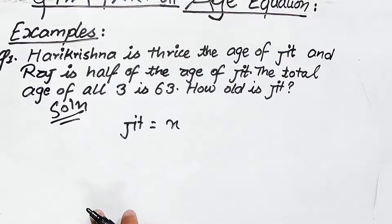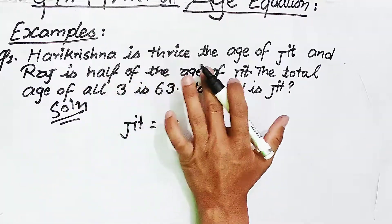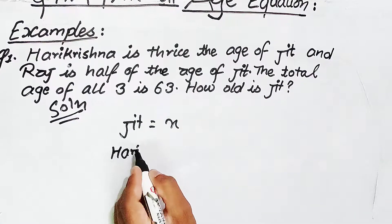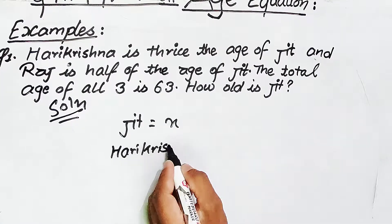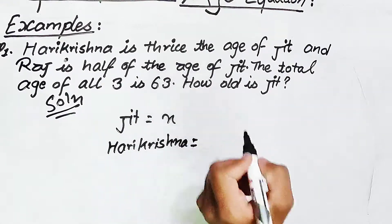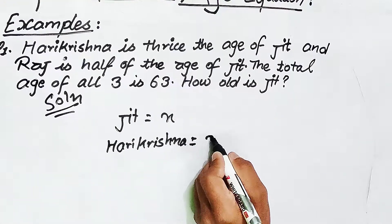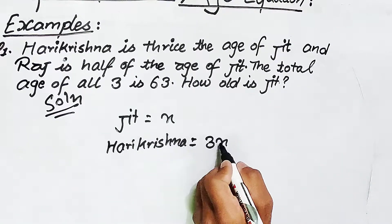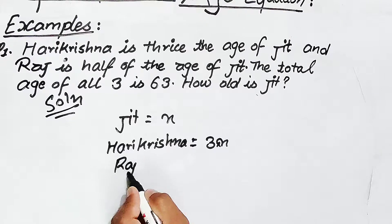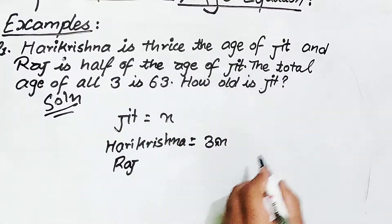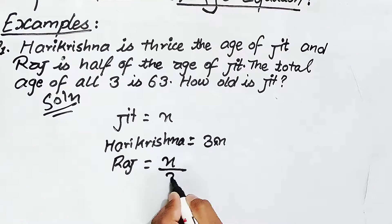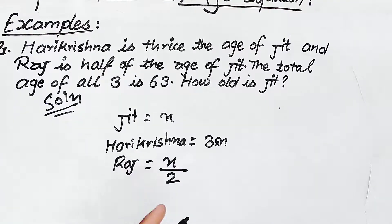Harikrishna is thrice the age of Jid. So Harikrishna's age is 3x, and Jid's age is x. Thrice age means 3x; x is half of the age of Jid.